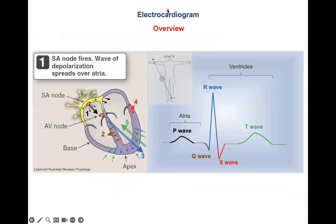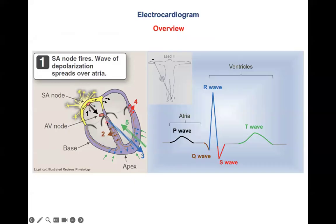We have an overview of the ECG tracing based on lead 2 according to Einthoven. We have a P wave, QRS complex, and T wave, which we will discuss step by step. These arrows indicate the vectors — the depolarization or repolarization waves — which we will discuss in the next slides.